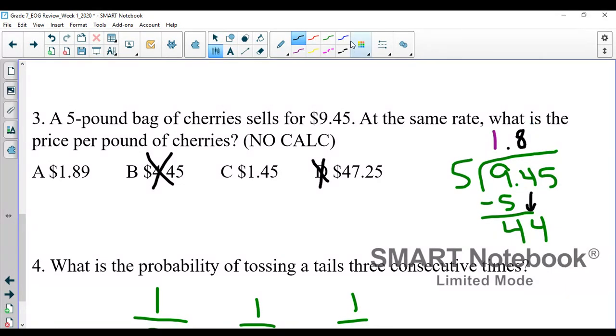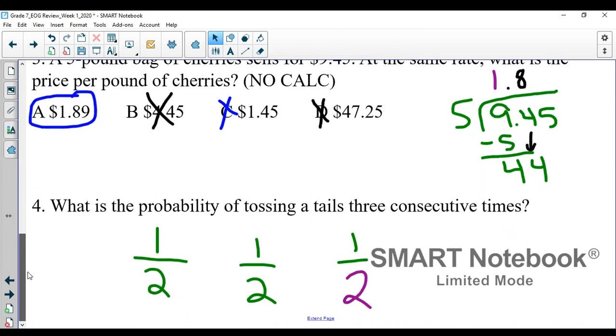Right here, since we know that our tenths place is going to be an eight, that means answer choice A is the only reasonable answer for this. So even if you can't completely long divide and finish it all the way, if you understand the basics of the concepts, you can kind of work around some of the trickier parts.